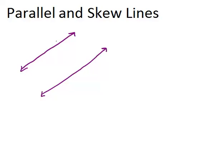So on this screen, these two lines are in the same plane, and if they never intersect, then they are parallel. The way we notate that two lines are parallel is with little arrows, like this.